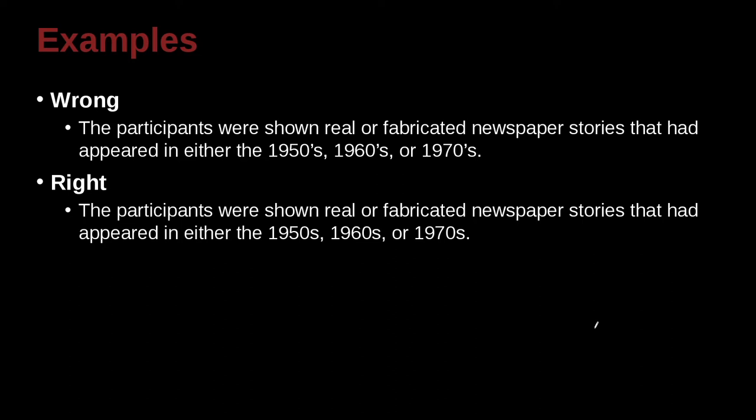The participants were shown real or fabricated newspaper stories that had appeared in either the 1950s, 1960s, 1970s. Now this is something that confuses me a lot, that's for sure. It's easy to forget because you do see people use this way often. But the APA recommends that you do not include the apostrophe. You simply add the S. Now why the S? Because what we're saying is it's plural. This is 1951, 52, 53, something inside of there. Of course, it's possible it could be all the way up to 1959, something inside of that range. So all of those years are plural, but you do not need the apostrophe. Just add the S.